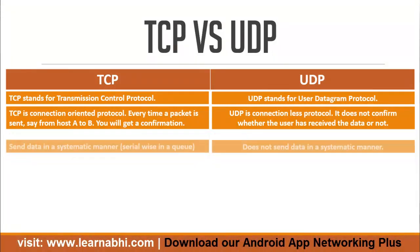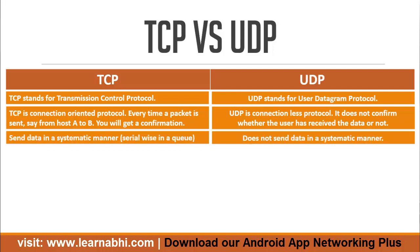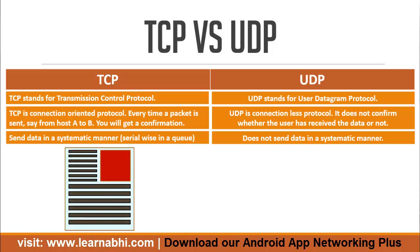TCP protocol sends data in a systematic manner — that is, serial-wise, in a queue. On the other hand, UDP protocol does not send data in a systematic manner. For example, while browsing the internet, you might have noticed that a webpage loads in a systematic manner, exactly how it is designed — this is because of the TCP protocol.